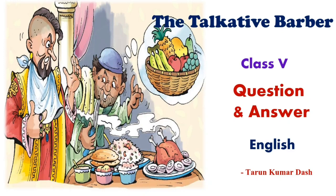Friends, in Part 1 we have already discussed how to read the story, how to pronounce the new words, we discussed the new word meanings and how to use them in sentences. We also discussed how to write the questions and answers. Now we are going to write the textual exercises, some opposite words, and different types of processes related to some events. So let's start the story — The Talkative Barber, Class 5 English question and answer.